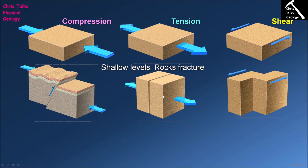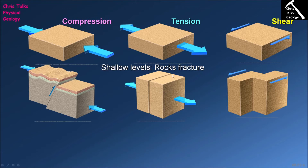In the case of tension, once we apply sufficient tensional stress the rock will fail in a brittle fashion. It's going to crack, and we end up forming an opening in the rock referred to in geology as a joint. These empty spaces can't really persist in nature — fluid begins moving through them and they are very often filled up by secondary minerals such as calcite or quartz.